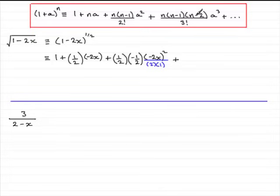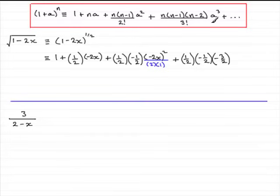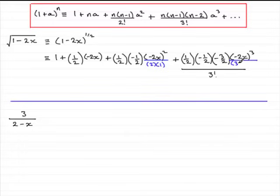For the next term we have n times n minus 1 times n minus 2. So the power is a half, subtract one to get minus a half, then subtract another one to get minus 3 over 2. We've got a cubed, and a is minus 2x, so minus 2x all cubed, all over 3 factorial — which I'd write as 3 times 2 times 1 on the bottom line. Don't forget to write plus and so on at the end.